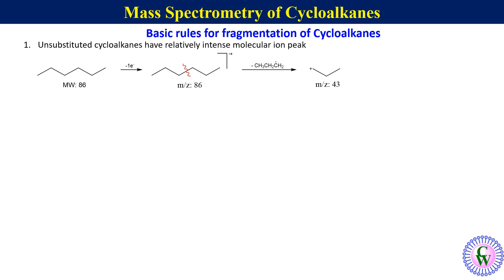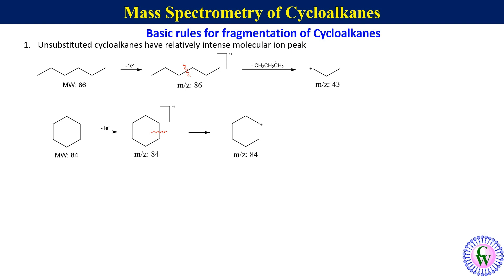If we have cyclohexane with a molecular weight of 84, removal of one electron gives the molecular ion with m/z of 84. Breaking one C-C bond leads to an open-chain radical cation with the same m/z value of 84. A fragment ion is only generated if it undergoes a second C-C bond cleavage — for example, breaking another C-C bond eliminates an ethylene molecule, generating a radical cation with m/z of 56.